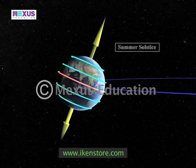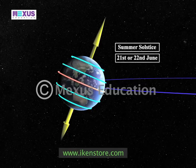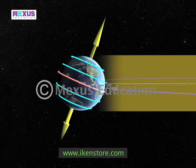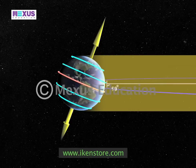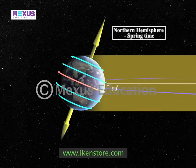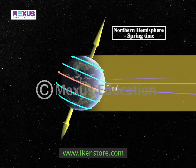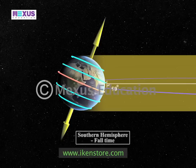The summer solstice occurs on the 21st or 22nd of June. On this day, the sun's rays are directly perpendicular to the Tropic of Cancer, resulting in the northern hemisphere receiving the largest amount of solar radiation. Because of this, the daytime in the northern hemisphere is the longest in the year, while the night time in the southern hemisphere is the shortest in the year.